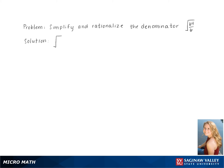To simplify the square root of 64 divided by 6, we start by taking the square root of the top and bottom of the fraction, giving us the square root of 64 over the square root of 6. The square root of 64 simplifies down to 8, giving us 8 over the square root of 6.